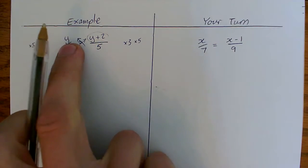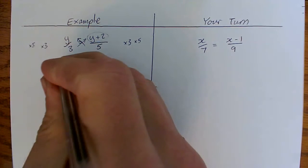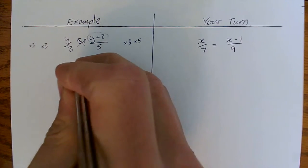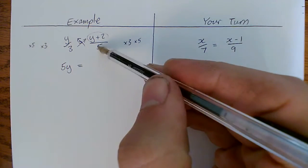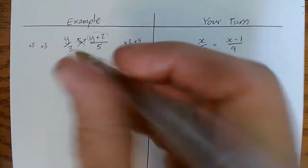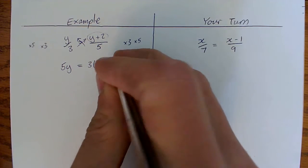If we times this side by 3, we just end up with y, times that side by 5, we get 5y. Timesing this side by the 5 gets rid of the divide by 5, timesing it by 3, we get 3 lots of y plus 2.